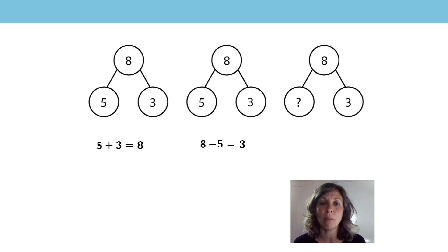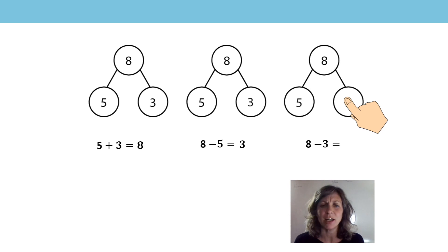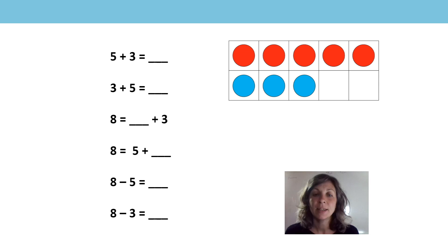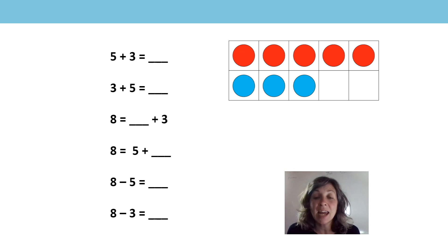What's the missing number in this part-part-whole? Did you say 5? What about if I asked you what is 8 minus 3? Is it 5? Let's have a look at these equations — I bet we can do them really quickly. What do you notice about all of these equations? Did you notice that they're all linked? And they're all going to use the numbers 8, 5 and 3.